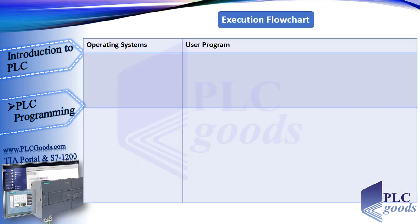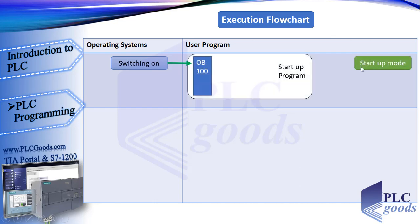Now let's see a flowchart which shows an overview of how the user program executes. There is an operating system and a user program. After the power supply has been switched on, the control processor checks the consistency of the hardware and parameterizes the modules. Then the startup program is executed once if present. User programs are usually divided into individual sections called blocks, which are OB, FC, and FB. OB, or organization blocks, represent the interface between the operating system and the user program. The operating system calls an OB for specific events.